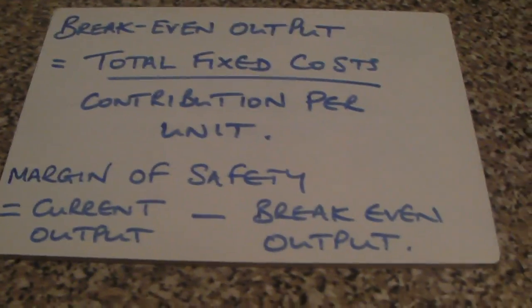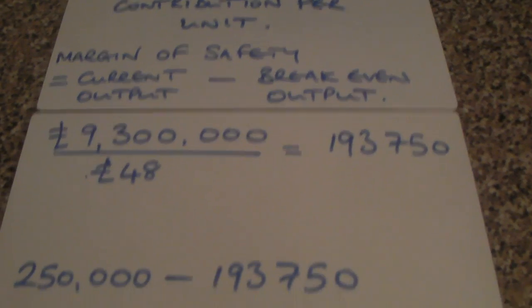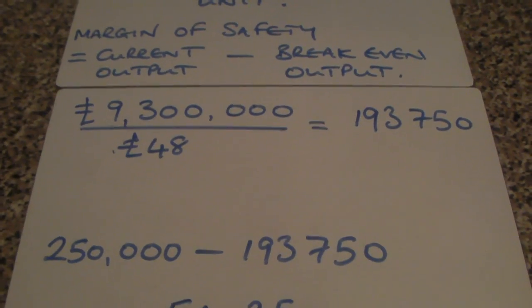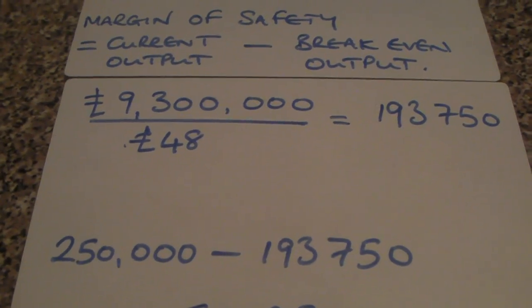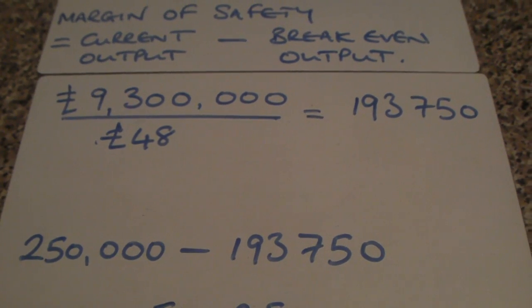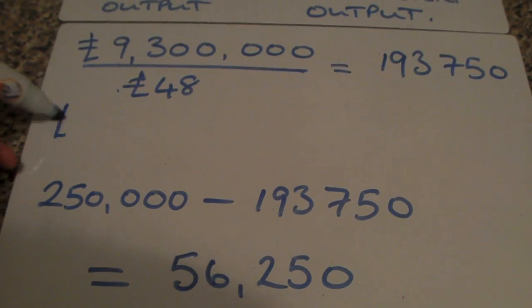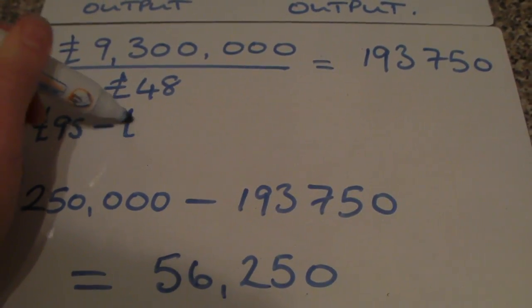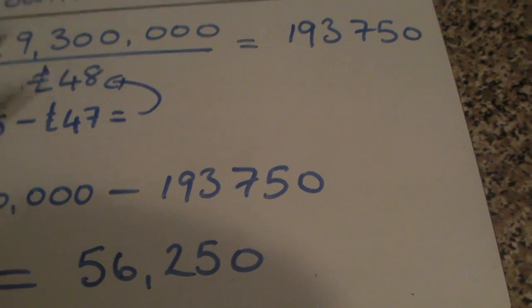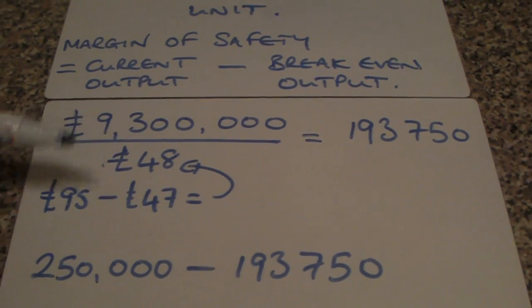Let's bring in a worked example of breakeven output and margin of safety. Assume we have a product that has cost £9,300,000 in fixed costs to develop and bring to market. Our contribution per unit is calculated from a selling price of £95 minus £47 of variable cost per unit, giving us a contribution per unit of £48.